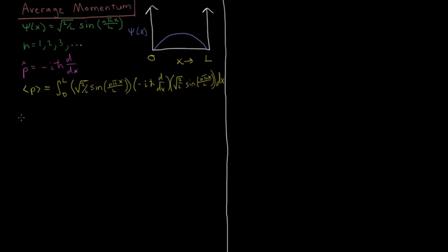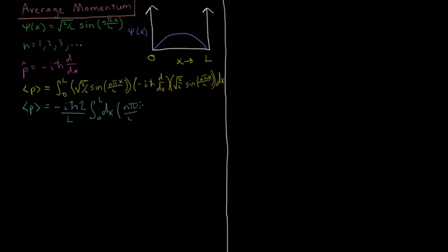Going to the next line, we can pull out the two square roots of 2 over L and the i h-bar to give minus i h-bar times 2 over L, integral from 0 to L, dx. Then we act on the wave function with the operator: differentiating a sine gives a cosine, and by the chain rule we bring out a factor of n pi over L. So we get sine of n pi x over L times cosine of n pi x over L.